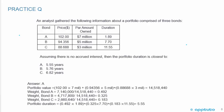This question requires one extra sub-calculation because they give us the price and par amount. To calculate portfolio duration, we need market values: price times par value. Bond A: 102% times 7 million = 7,140,000. Bond B: 0.94356 times 5 million = 4,717,800. Bond C: 0.88688 times 3 million = 2,660,640.